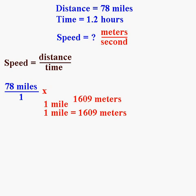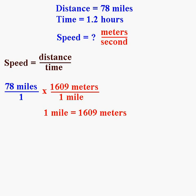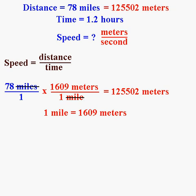So I need to multiply by 1609 meters over 1 mile. That way, miles cancel and I'm left with meters. When I take 78 times 1609, I get 125,502. So 78 miles is the same thing as 125,502 meters. That gives us our distance in meters, so let's put that up at the top. The distance is 78 miles, but it's also 125,502 meters. Either expression is correct — just two different units.